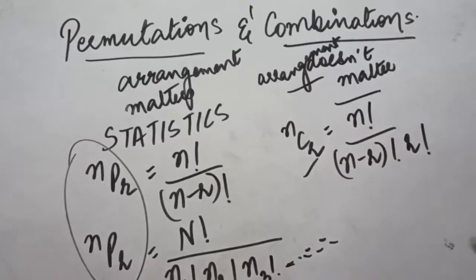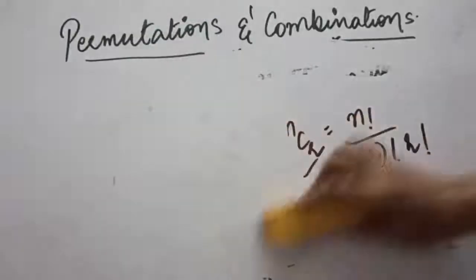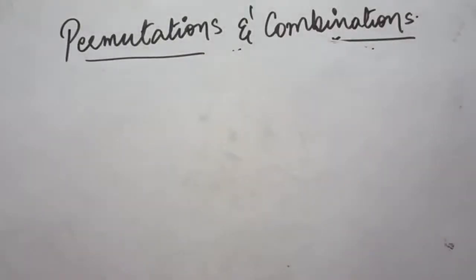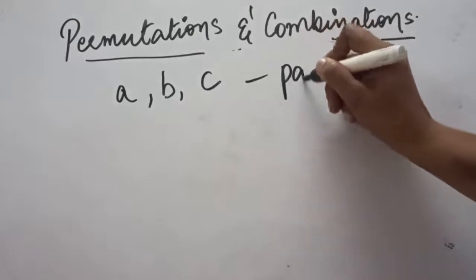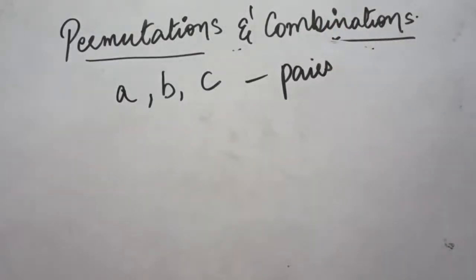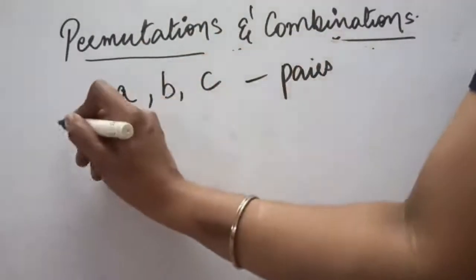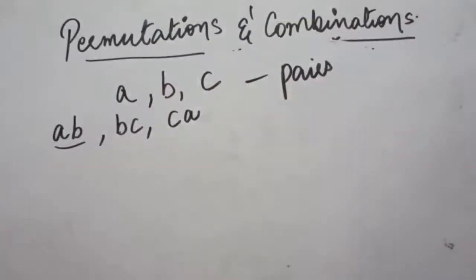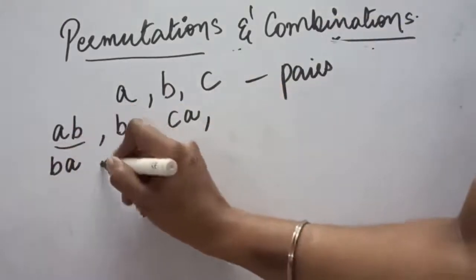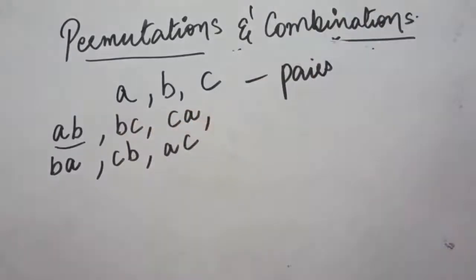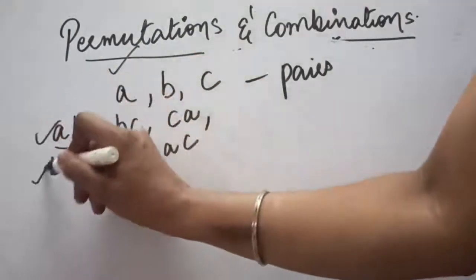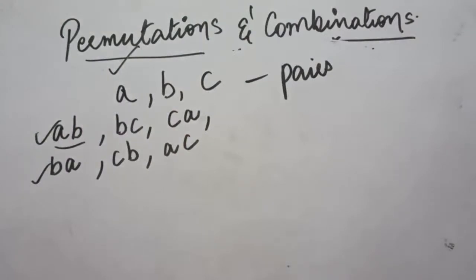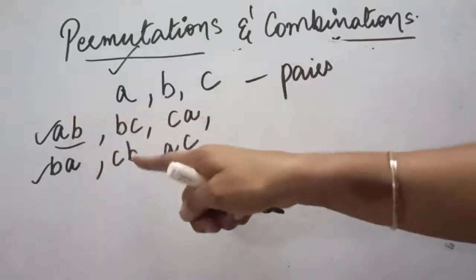To clarify permutations and combinations with an example: suppose you have three letters A, B, and C, and you have to make pairs of two. In case of permutations, since arrangement matters, AB is one pair, BC is one pair, CA is one pair, and also BA, CB, and AC are each different pairs — because AB is different from BA when arrangement matters. So these three reversed pairs are also counted separately.